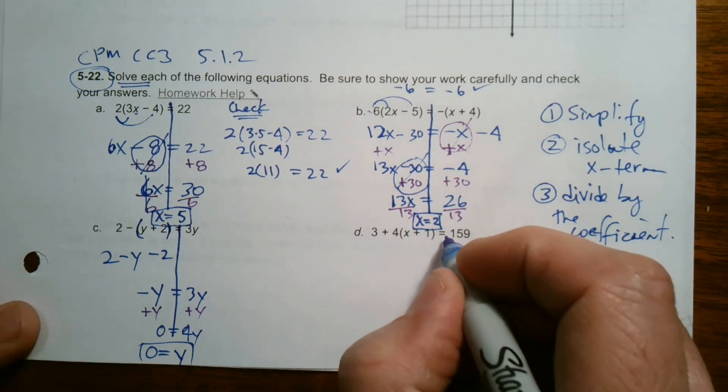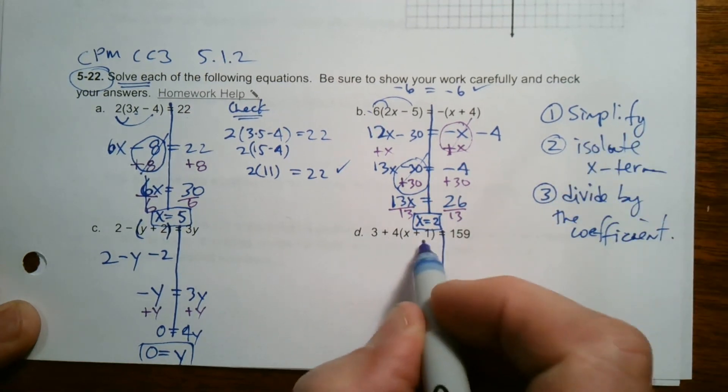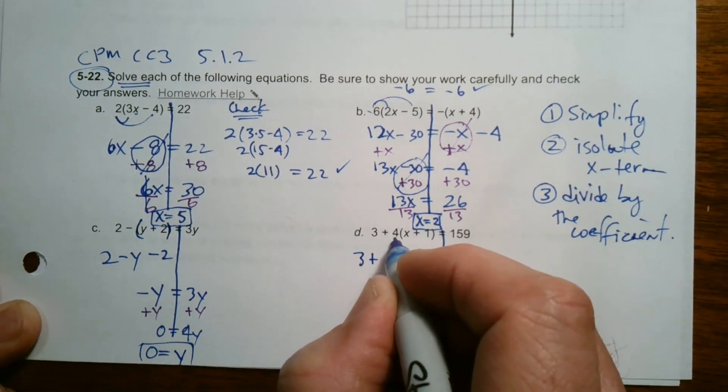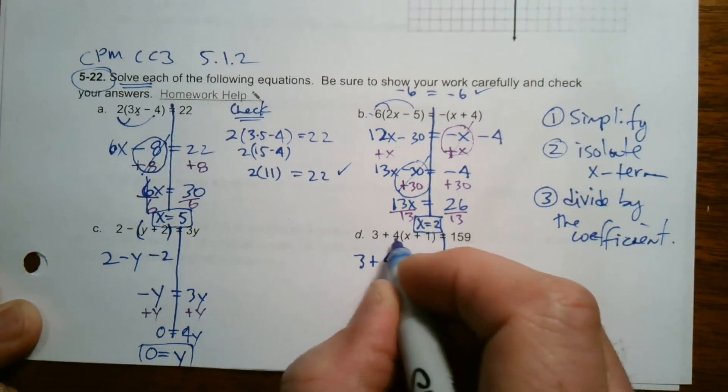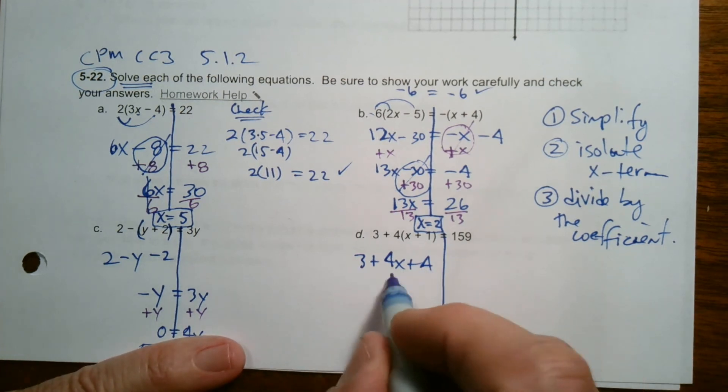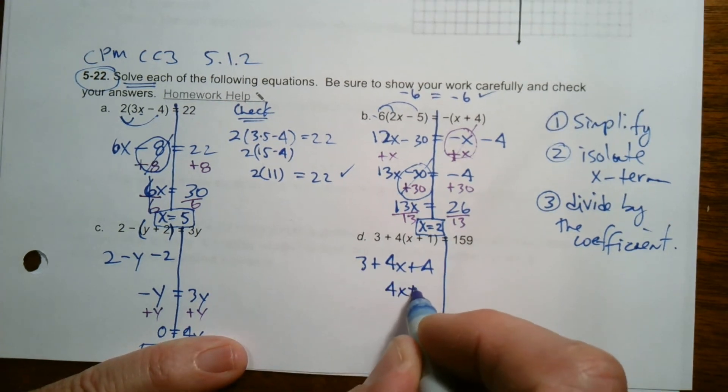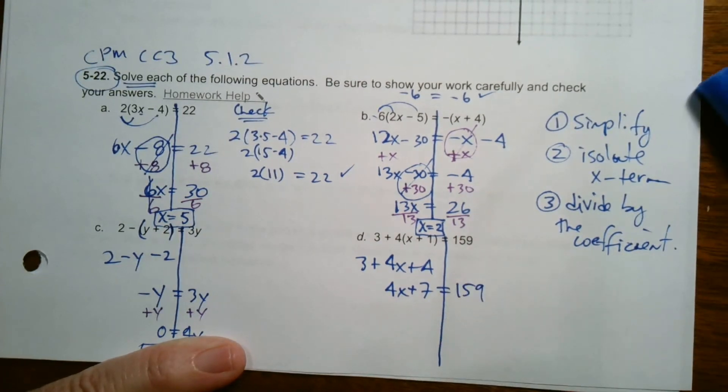D again, simplify. So right here I've got some simplifying. So it's three plus distribute, so four X plus four when you multiply the four through the parentheses. And then still combine like terms, so I have four X plus seven. And on this side just that 159.